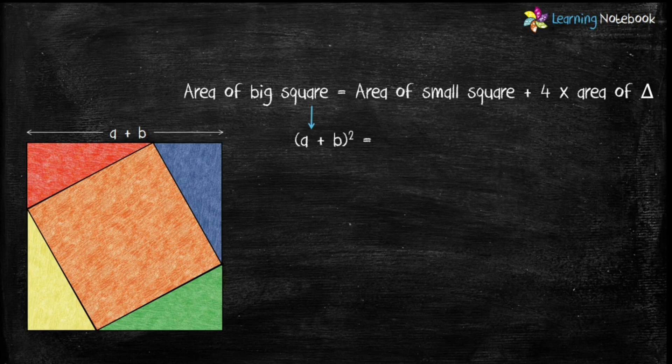Next, area of small square is again side square. Length of side of small square is c. So its area will be c².